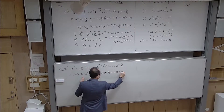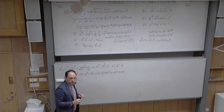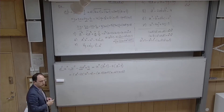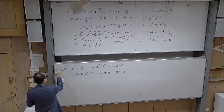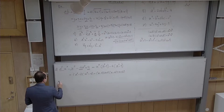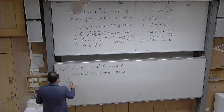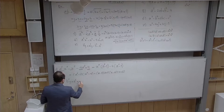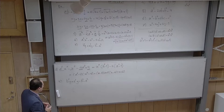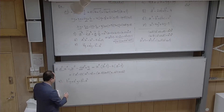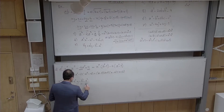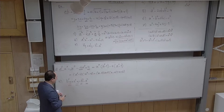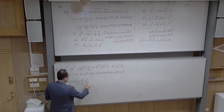I haven't talked about the guesswork method when the leading coefficient is not 1. Today I want to practice that. For example: factorize 2x² + 3x + 1. Using the longer recipe: set it equal to 0, then x = (−3 ± √(9 − 8)) / 4 = (−3 ± 1) / 4. So x₁ = −1 and x₂ = −1/2. Using the factorization formula: 2(x − x₁)(x − x₂) = 2(x + 1)(x + 1/2).